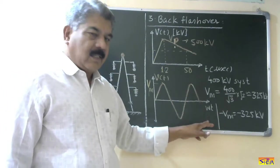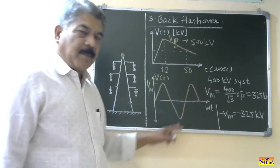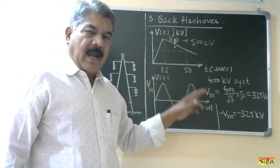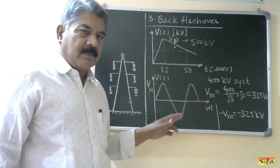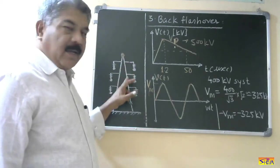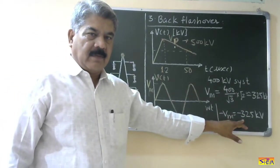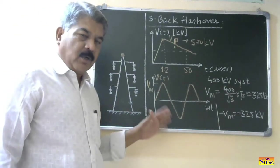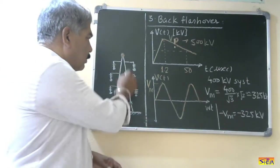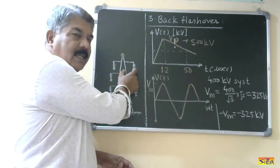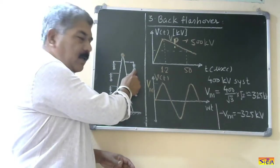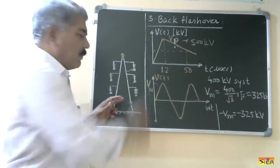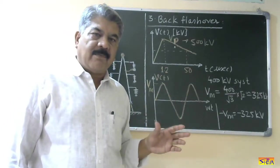Now consider one case. Next case. This waveform is passing through its negative peak minus 325 kV and at that instant the lightning overvoltage comes. So what will be the relative difference? 500 kV minus minus 325 kV. That is it will be 825 kV. Relative voltage potential difference will be 825 kV. So this 825 kV will be sufficient to break the air between these two points, between power conductor and this tower. So in this case the flashover will occur in reverse direction. Therefore it is called as back flashover.